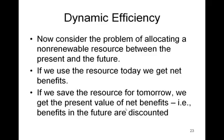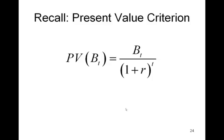Now let's move on to the case of dynamic efficiency. In the static case problem, we were thinking about allocating resources between Farmer 1 and Farmer 2, or between Joe and Judy. In the dynamic efficiency allocation problem, we're thinking about how do we allocate resources between the present and the future. If we use a resource now, we're denying the future access to that resource. The basic idea we're going to use is the present value criterion.